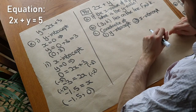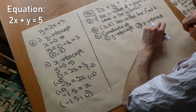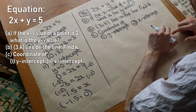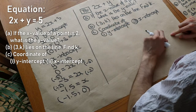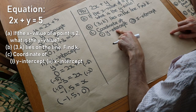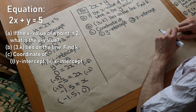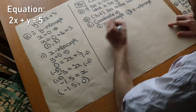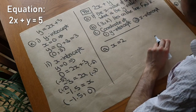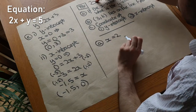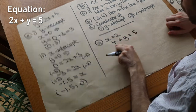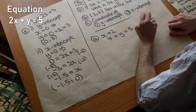As a final test-your-understanding question, we have 2x plus y equals 5. First: if the x value of a point on that line is 2, what would the y value have to be? Any point on the line must satisfy the equation, so we substitute: 2 times 2 is 4, plus the y value equals 5. 4 plus what is 5? The answer is 1, so the y value is 1.